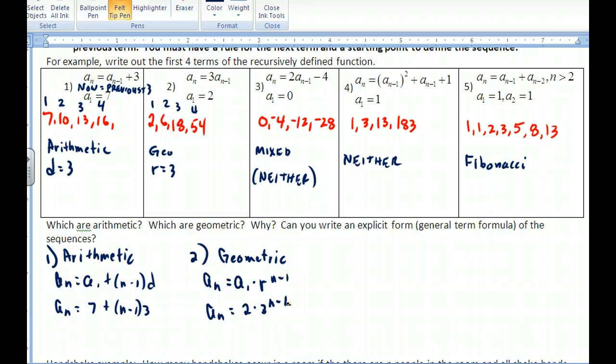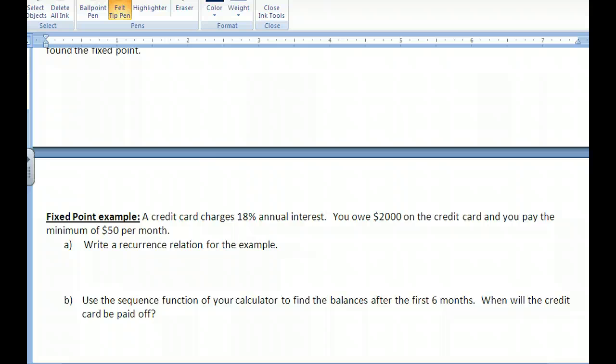The other 3, I can't write a formula for right now. This mixed one will be able to, possibly later on. And then this one that has a quadratic recursive generator will probably be able to do that later on too. Fibonacci, I don't believe, has an explicit way to write that. But if I'm wrong, let me know. That would be great to find out.